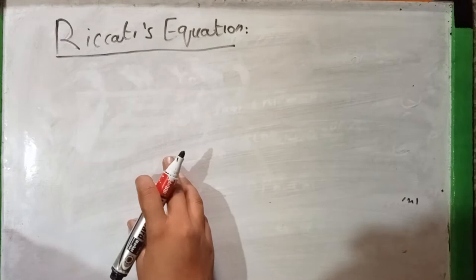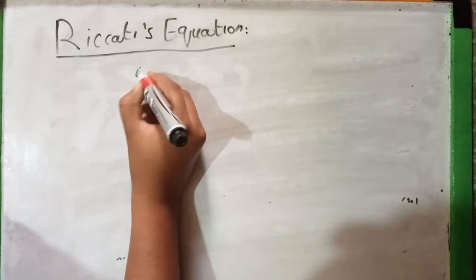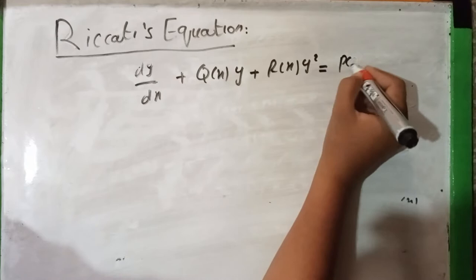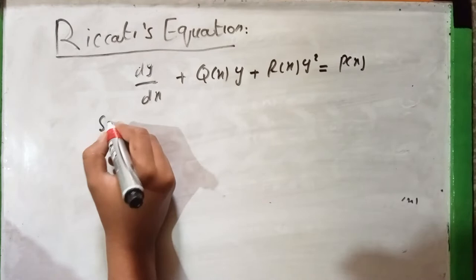Welcome to this channel. In this video we will discuss the Riccati equation. The Riccati equation has the form dy/dx plus q(x)y plus r(x)y² equal to p(x). The Riccati equation is a special case of the Bernoulli equation.